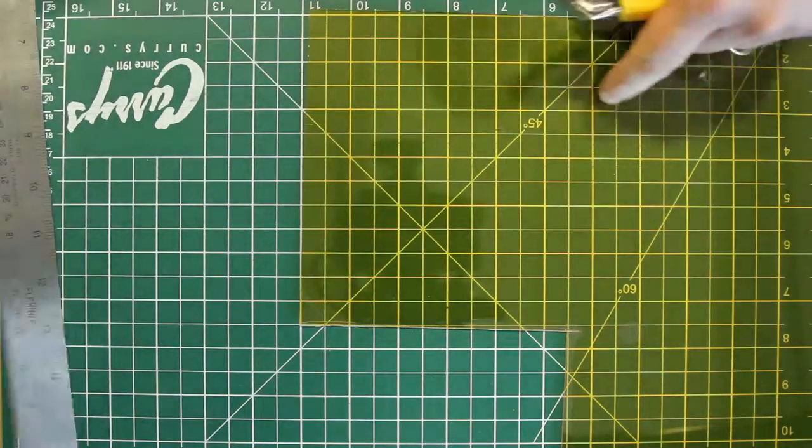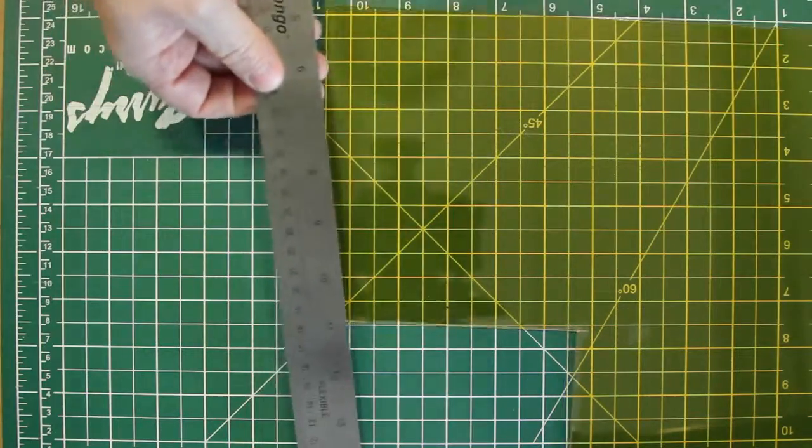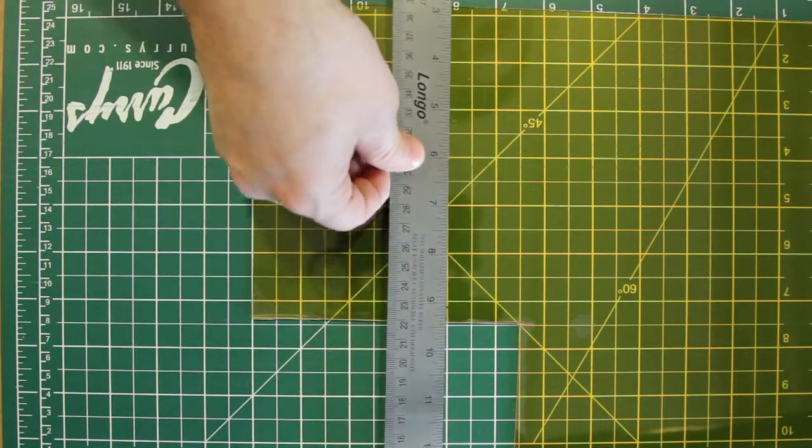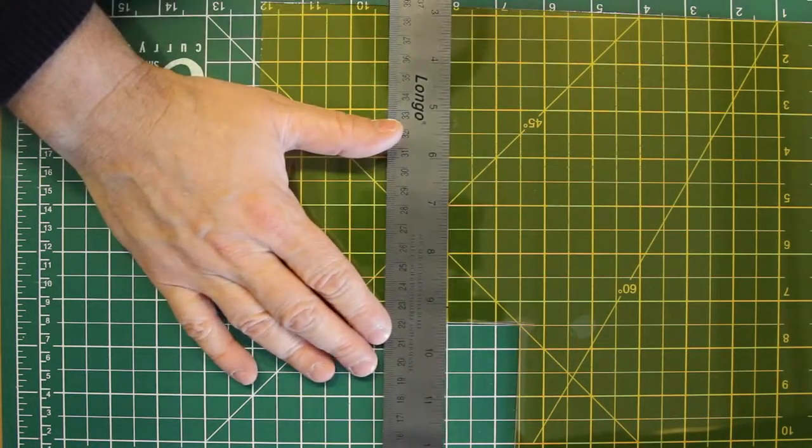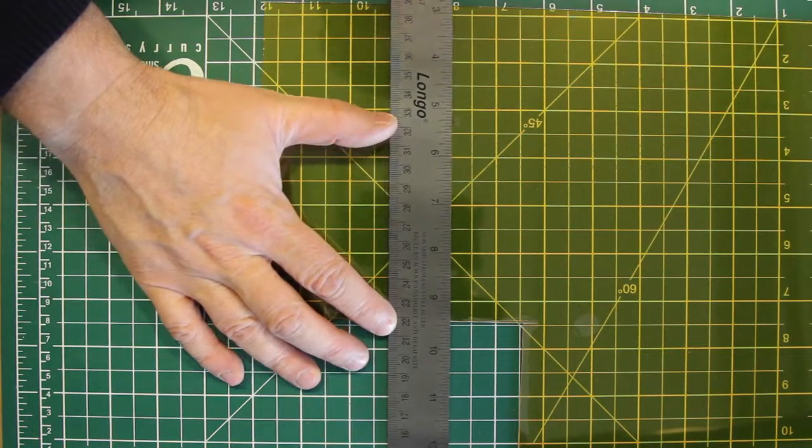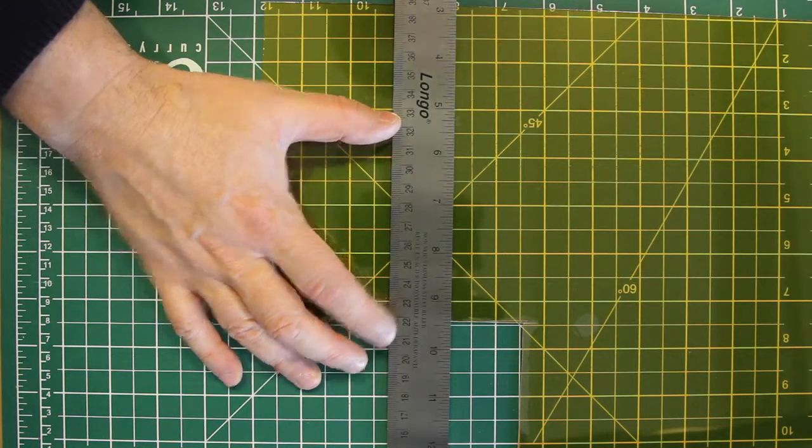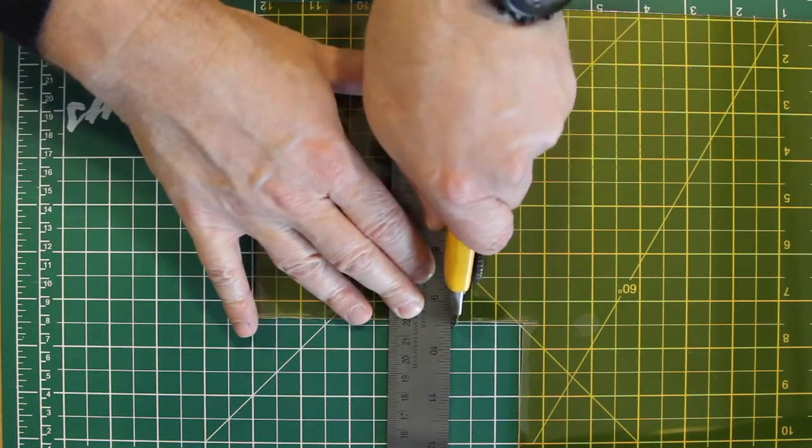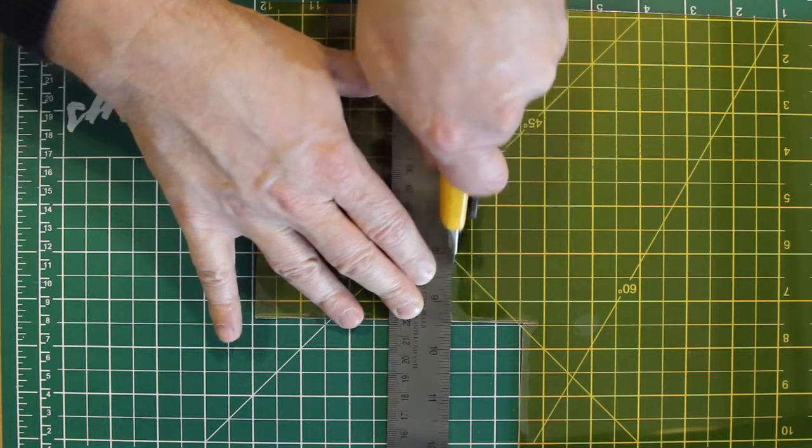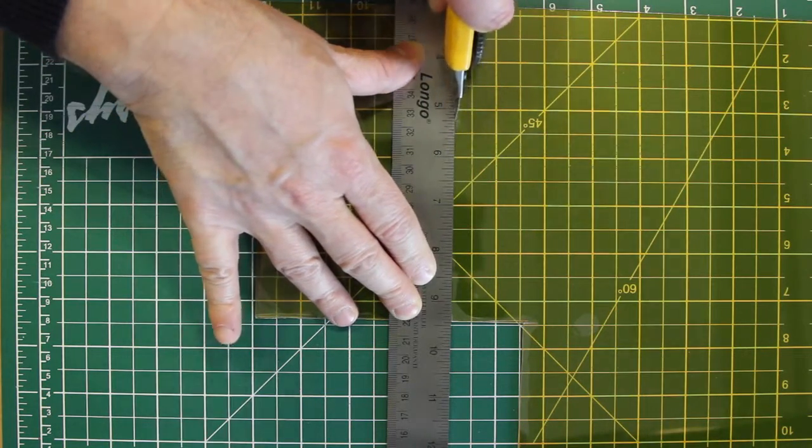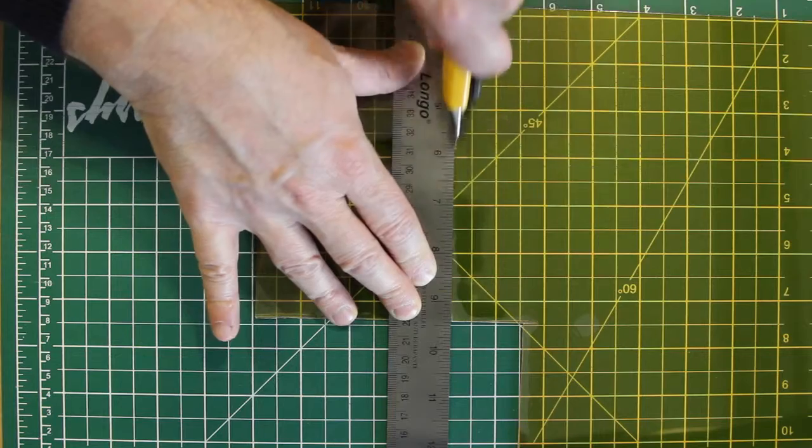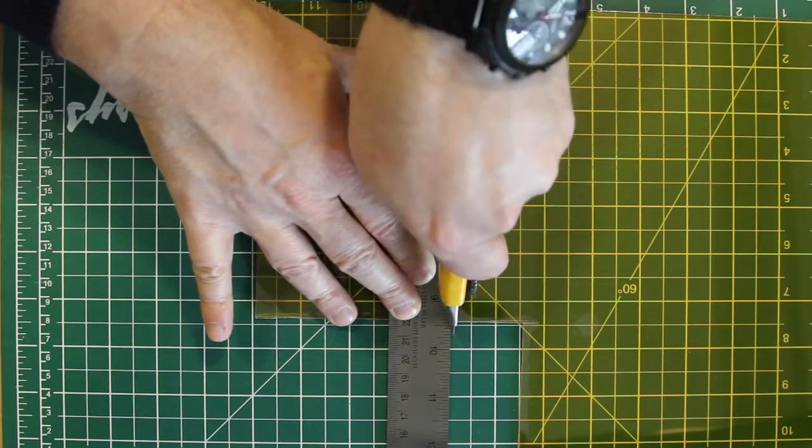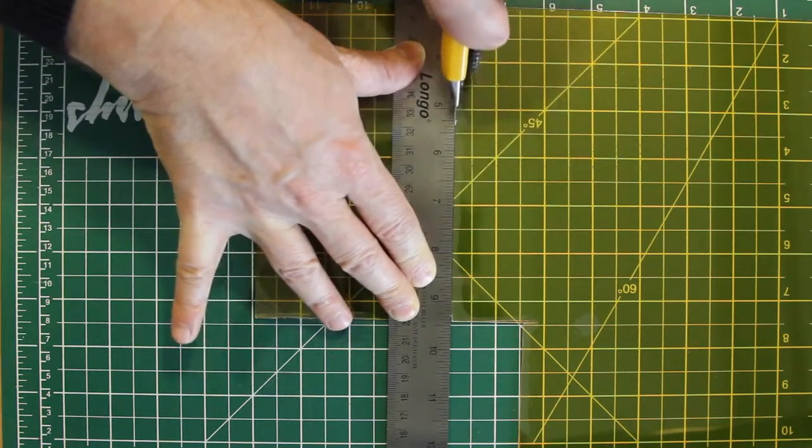Put the film aside, and using your ruler we're just going to line this up and try to do this in multiple passes so that you're not trying to cut through all of the material in one pass.